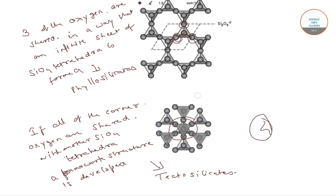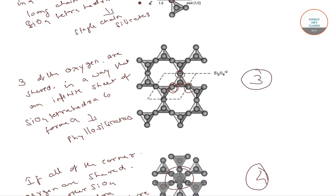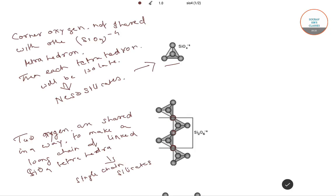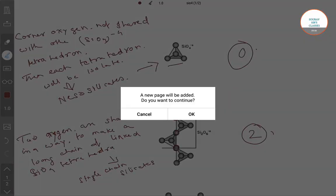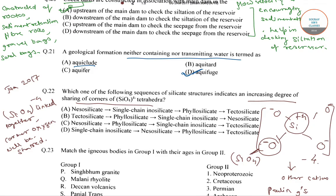In Tectosilicates, four corners are being shared. In Phylosilicates, three corner oxygen are shared. In single chain silicates or Inosilicates, two corner oxygen are shared. And in Nesosilicates, no corner oxygen are shared. So the sequence of increasing degree of sharing corners is: Nesosilicates, then single chain Inosilicates, then Phylosilicates, then Tectosilicates. Therefore, the correct answer is option A.